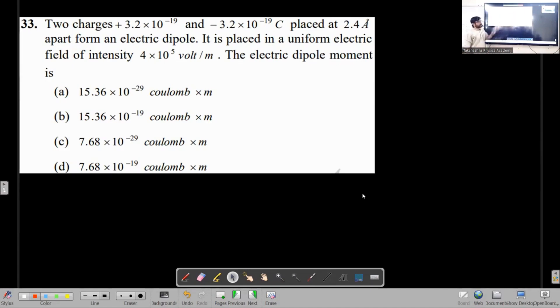Here we come, placed at 2.4 angstrom, you know the angstrom is 10 to minus 10. Two charges placed at 2.4 angstrom apart form an electric dipole. It is placed in a uniform electric field of intensity 4 into 10 to 5. The electric dipole moment is?